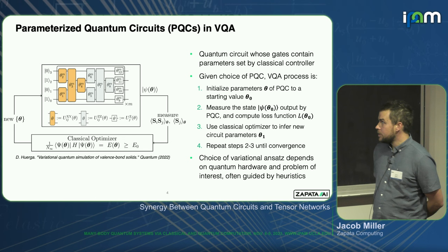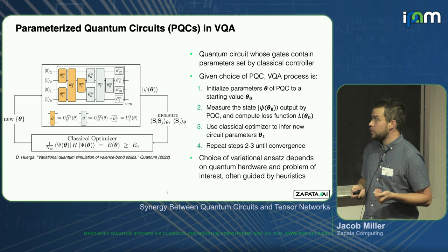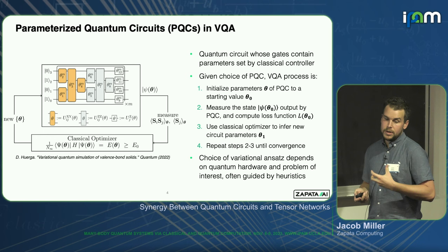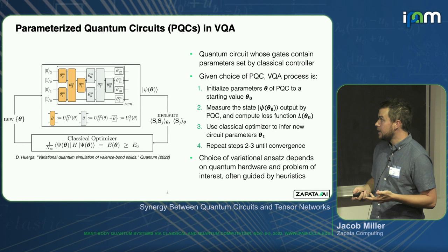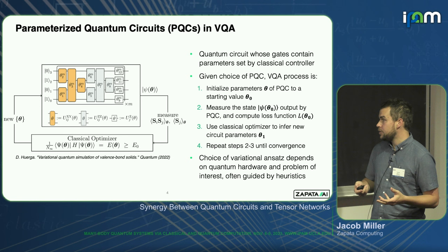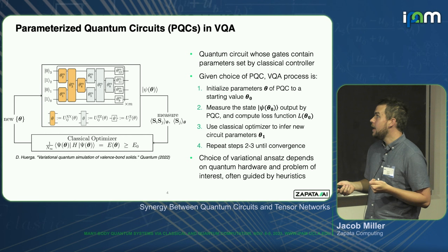In order to have variational quantum algorithms, you typically use a parameterized quantum circuit — PQC for short — which is just a circuit with the parameters you're varying to achieve a low loss value. These are often fixed, though you can have procedures like adapt VQE where you grow them adaptively. The key thing is that these have some particular parameters.